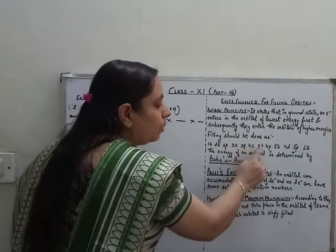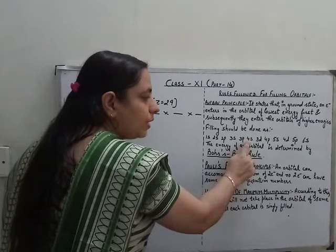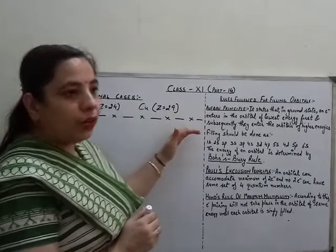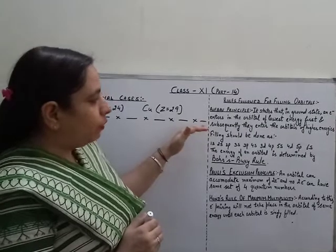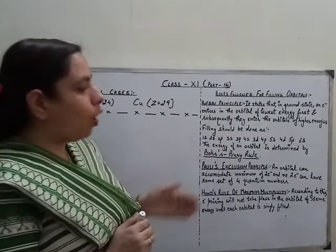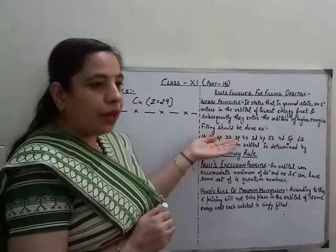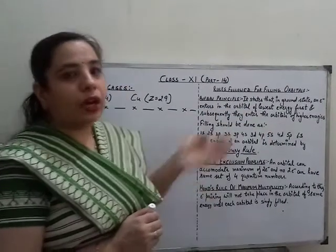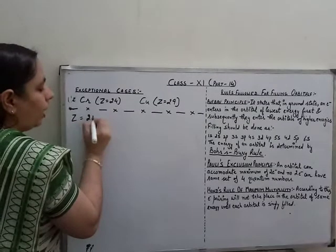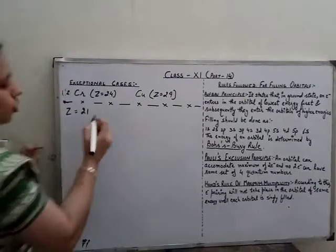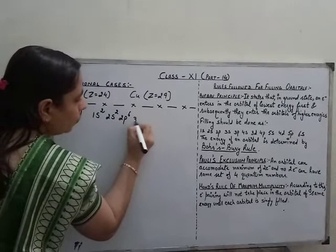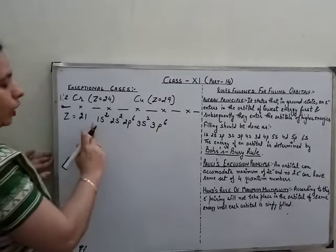The energy of 4s is less than 3d. So this principle states that when electrons fill the orbitals of an atom, the orbitals of lower energy will be filled first and then the orbitals of higher energy. For example, if we take an element with atomic number 21 and write the electronic distribution, it will be 1s2, 2s2, 2p6, 3s2, 3p6.